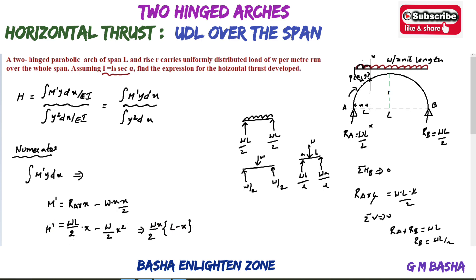Now, Y is the ordinate of the parabolic arch. For a parabolic arch, the standard formula for the intermediate ordinate is: y equals 4R by L-squared times X times (L minus X), where R is the rise at the centre, L is the overall span, and X is the distance from A to the section.